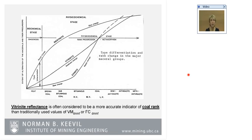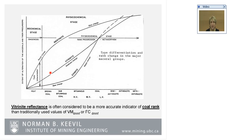This diagram shows how vitrinite reflectance changes versus rank and how it can be used as a very reliable parameter to determine rank. The first stage is the biochemical stage — diagenesis — when we have peat formation and the composition of different plant material. The second stage is metamorphism — heat and pressure — which is the coalification process when we start with lower-rank coal and end up with higher-rank coal. Measuring vitrinite reflectance shows a very good correlation with coalification stages.